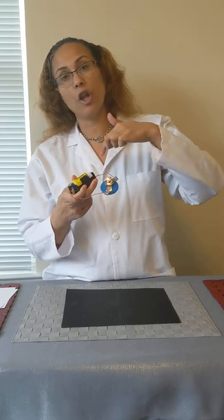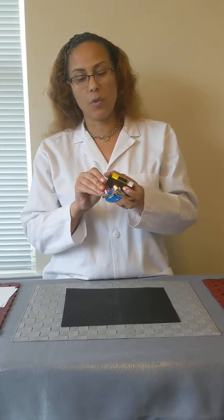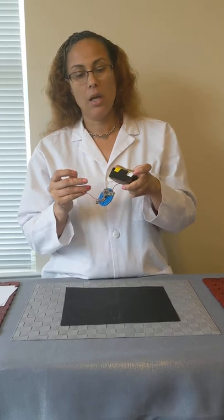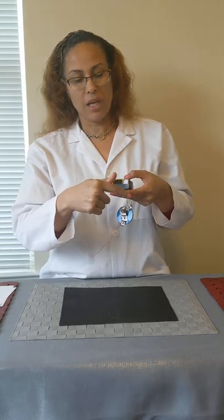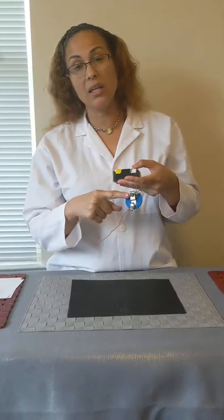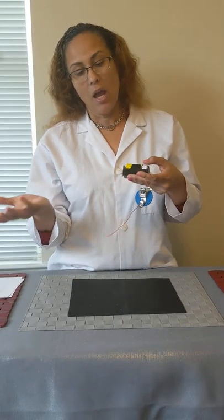So therefore, I have a complete flow of energy happening here. If I was to take one of the wires out, the battery would not be giving energy into the wires, which then does not give energy into the light because it's not a complete circuit. It's just an open circuit right now.